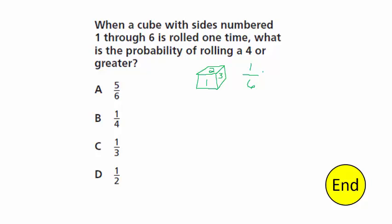Each number has a 1 in 6 chance. For 4 or greater, those choices are 4, 5, or 6 — each with a 1 in 6 chance. I add these three together and get 3 out of 6, and reducing that down I get 1 half. So there's a 50% or 1 half probability of rolling one of those three numbers. Choice D.